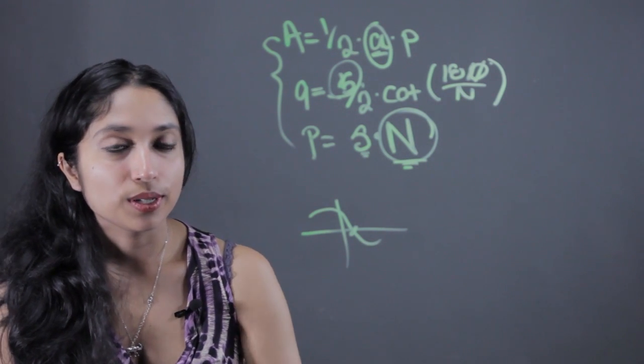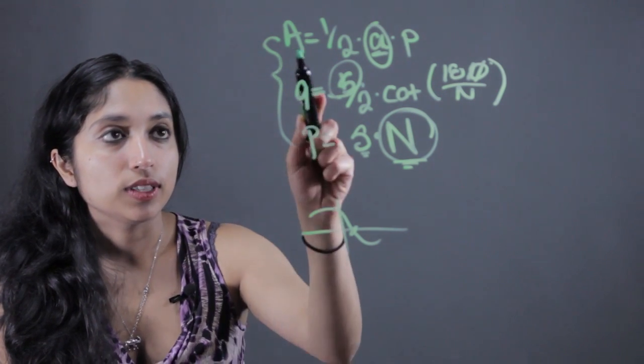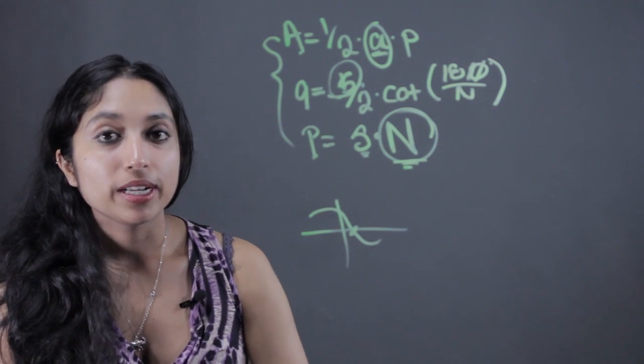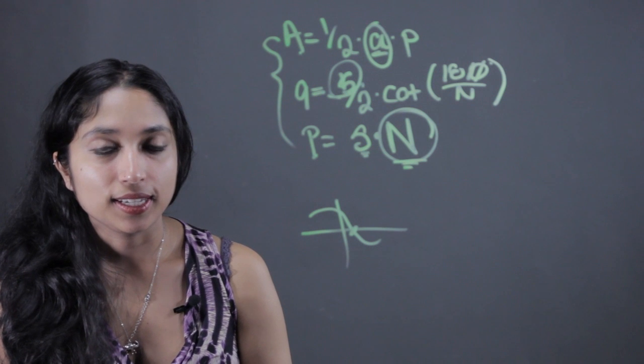And that's how you would solve for the number of sides of a regular polygon given the area and the perimeter. My name is Subway Gerwal and thank you for taking an interest in math.